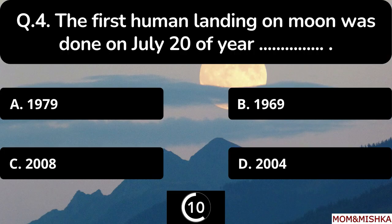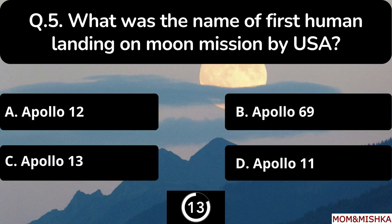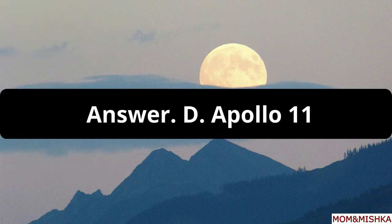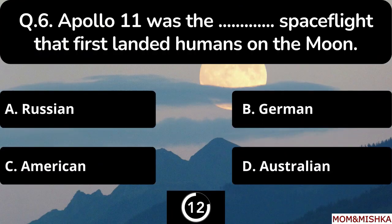The first human landing on the moon was done on July 20th of year blank — it's option B: 1969. What was the name of the first human moon landing mission by USA? The correct answer is option D: Apollo 11.